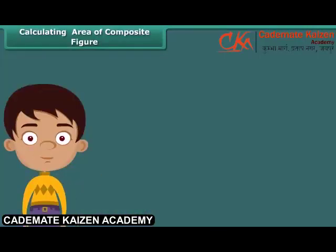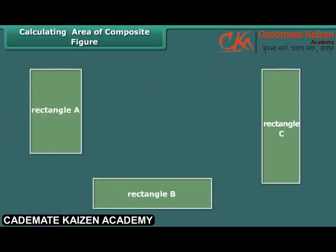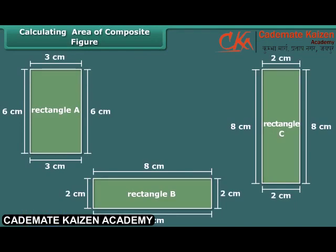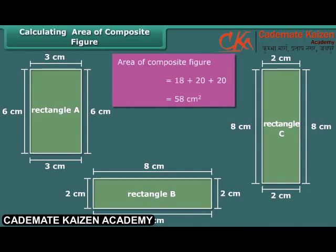Now let us calculate the area of a shape made up of multiple rectangles. First, break the composite figure into individual rectangles. Calculate the area of each rectangle, then sum up the areas to find the area of the composite figure. Here we can divide the given composite figure into 3 rectangles. Area of rectangle A is 18 square centimeters. Areas of rectangles B and C are the same, that is, 20 square centimeters each. Thus, the area of the composite figure is 18 plus 20 plus 20, which equals 58 square centimeters.